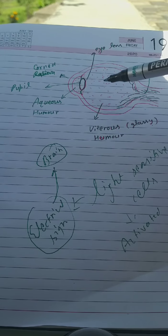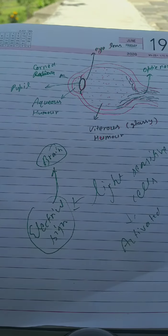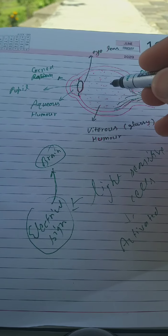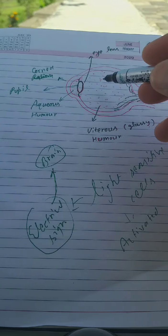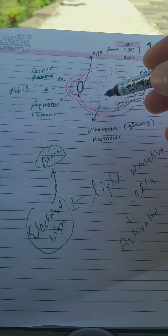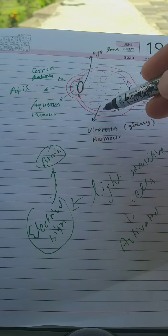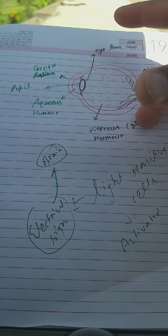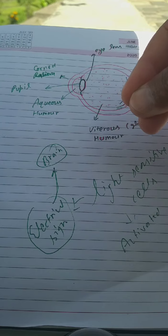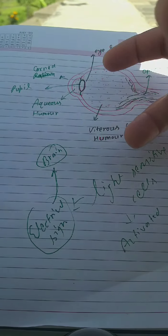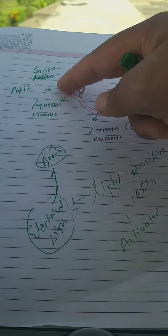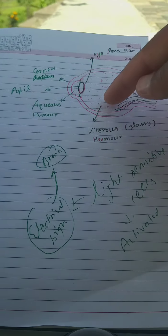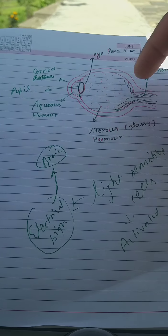So the vitreous humor is transparent, allowing light rays to pass through it. Now what is the function of the vitreous humor? The function is to provide support to the eyeball — it keeps the eyeball spherical. If the vitreous humor were not there, the eyeball would collapse.